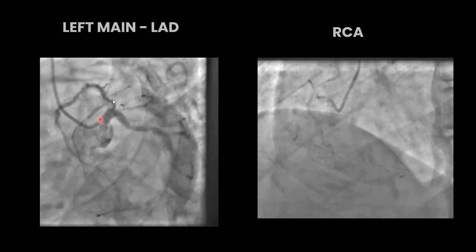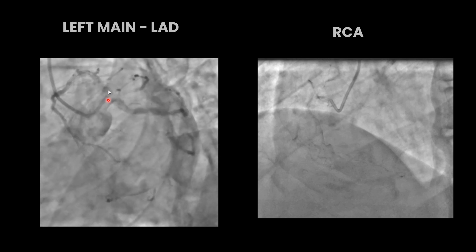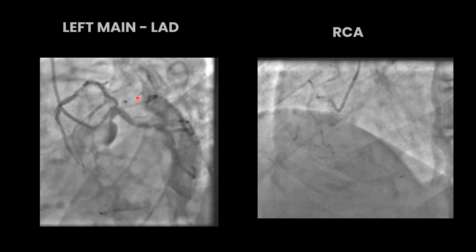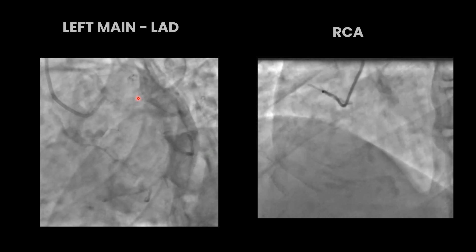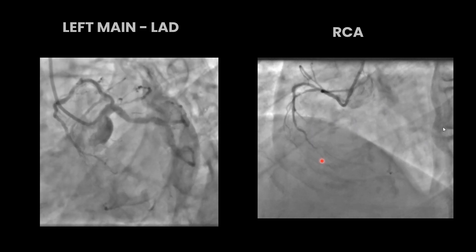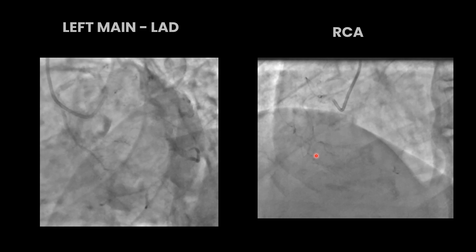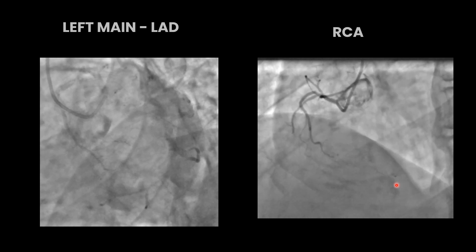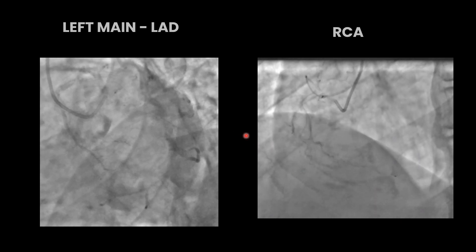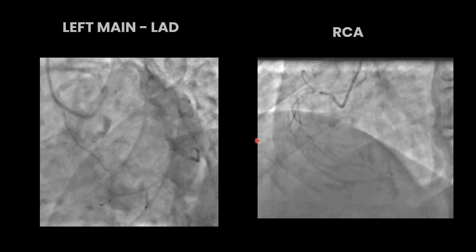In the left main, there is an eccentric calcified plaque causing significant occlusion of the left main ostium. In the right coronary, the vessel is small in this patient and is not supplying the posterior descending artery.